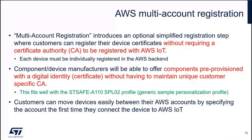For instance, you can register, test, and configure a device in a pre-production account. Then you can register and use the same device certificate — you don't need to change the device certificate — in a production account. When opting to use this feature, you will also use what we call SNI, Server Name Indication. It will be a string sent by the device as part of the TLS session to route to the correct IoT endpoint.